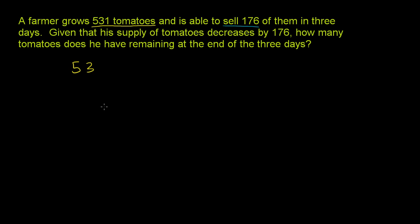Let me give myself a little bit more space to work with. He starts with 531 tomatoes and he's able to sell 176. So he's essentially going to subtract the 176 that he's selling if we want to figure out how many he's left with. So we're going to subtract 176.